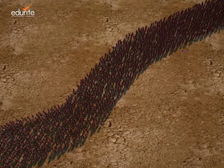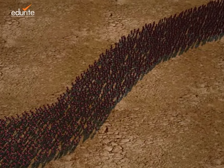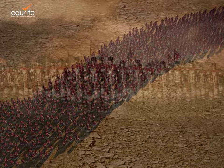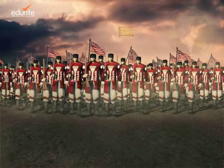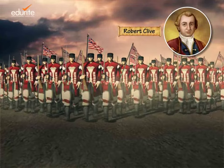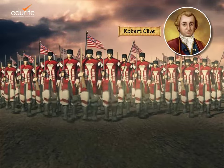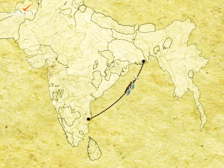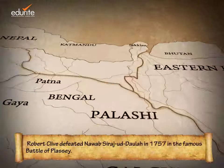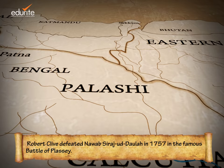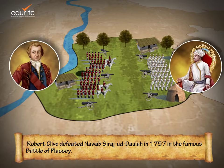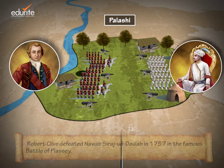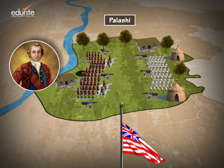To aid the company, armed forces were sent from Madras under the leadership of Robert Clive. The company's naval fleet was also sent.